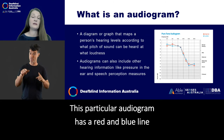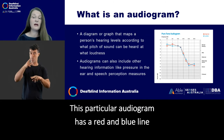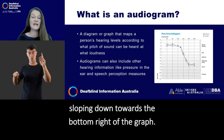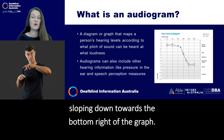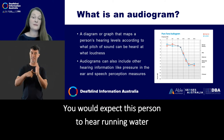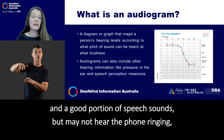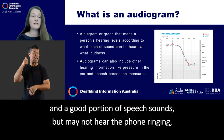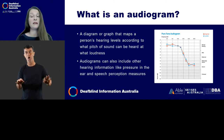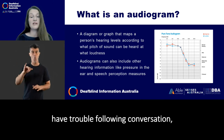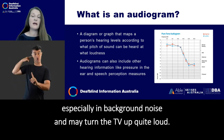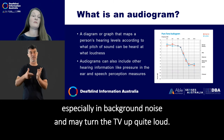You can overlay the audiogram onto the previous graph to help you determine what is within the range of this person's hearing. Sounds above the red line cannot be heard by the right ear, and sounds above the blue line cannot be heard by the left ear. This particular audiogram has a red and blue line running diagonally from the top left, sloping down towards the bottom right of the graph. You would expect this person to hear running water and a good portion of speech sounds, but may not hear the phone ringing, may have trouble following conversation especially in background noise, and may turn the TV up quite loud.